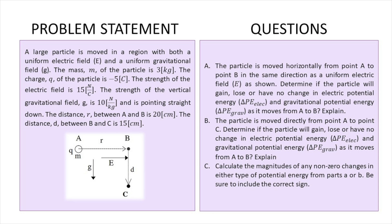So this is the problem we're going to be working with. A large particle is moving in a region with both a uniform electric field and a uniform gravitational field. The mass is 3 kilograms and it has a charge of negative 5 coulombs. The strength of the electric field is 15 newtons per coulomb. The strength of the vertical gravitational field is 10 newtons per kilogram pointing straight down. The distance between A and B is 20 centimeters, and the distance between B and C is 15 centimeters.